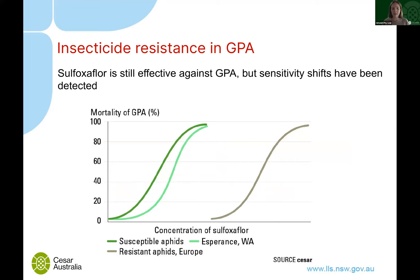Sulfoxaflor is an insecticide that can be used against green peach aphid, but we're also seeing shifts towards resistance here. In Europe there are already quite high levels of resistance, where even very high concentrations result in low mortality. We're already seeing a shift towards more resistant populations in Esperance. This will take another insecticide out of our toolkit if resistance develops, so we have to be very wary about how we use it.